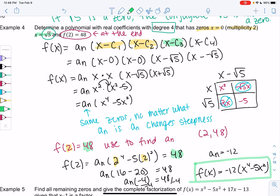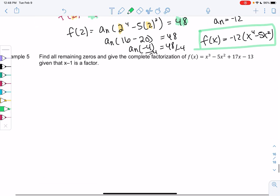Let's jump into example 5. We're going to find all the zeros, given that 1 is given. So we're going to find all the remaining zeros and give that complete factorization of x cubed minus 5x squared plus 17x minus 13, given that x minus 1 is a factor. So x minus 1 is a factor means 1 is a zero.